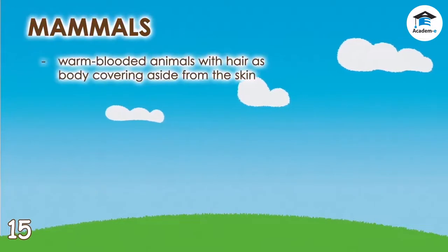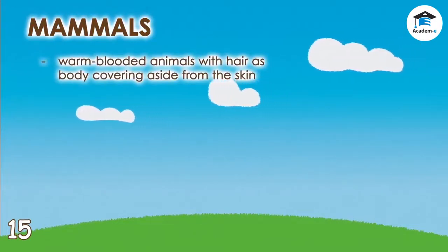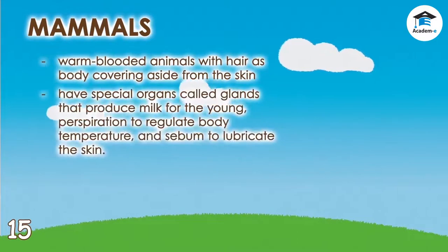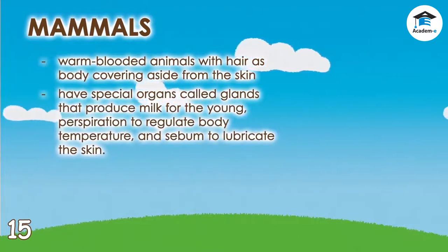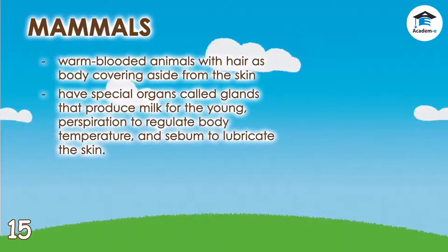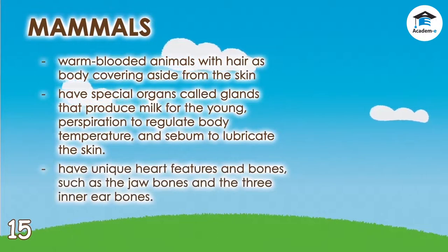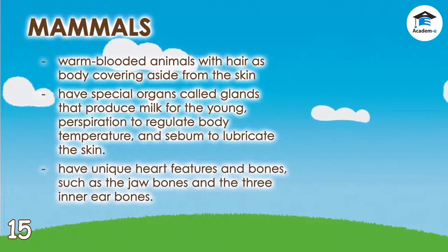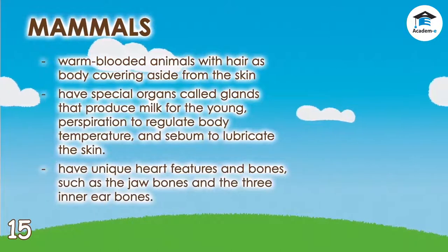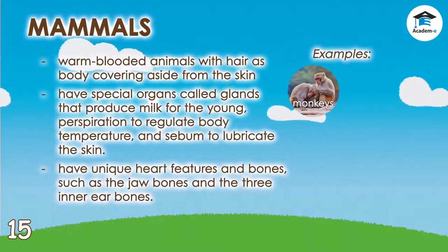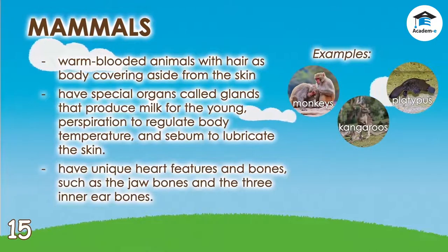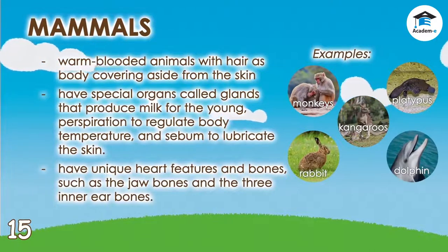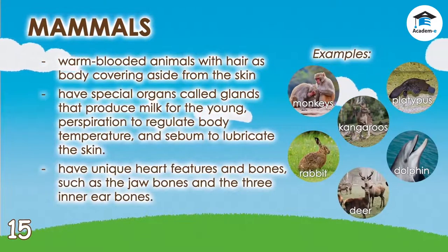Mammals are warm-blooded animals with hair as body covering, aside from the skin. Their special organs called glands produce milk for the young, perspiration to regulate body temperature, and sebum to lubricate the skin. They also have unique heart features and bones, such as the jaw bones and the three inner ear bones. Mammals include monkeys, kangaroos, platypus, rabbits, dolphins, deer, and bats.